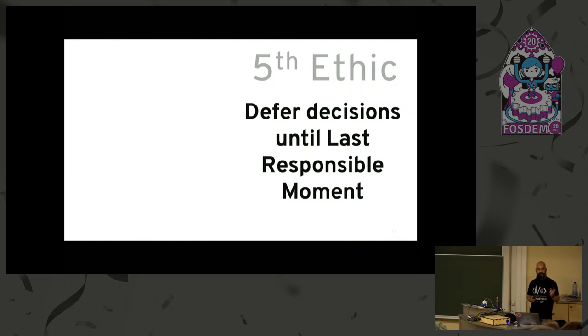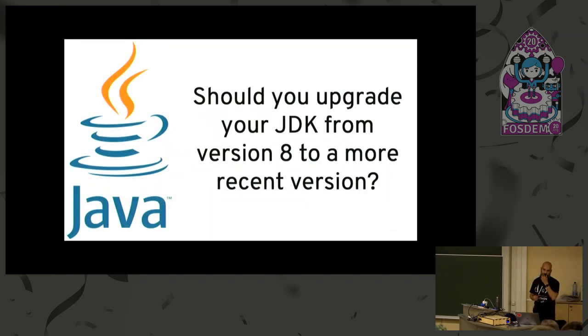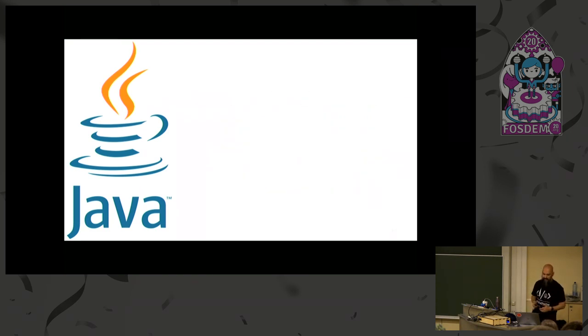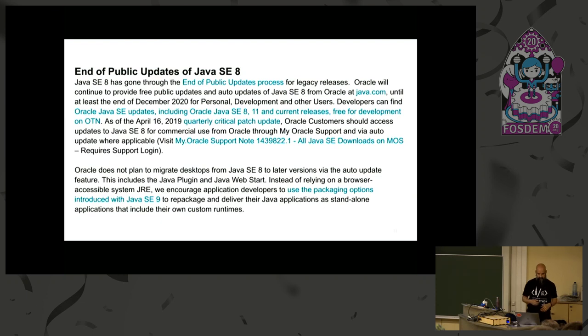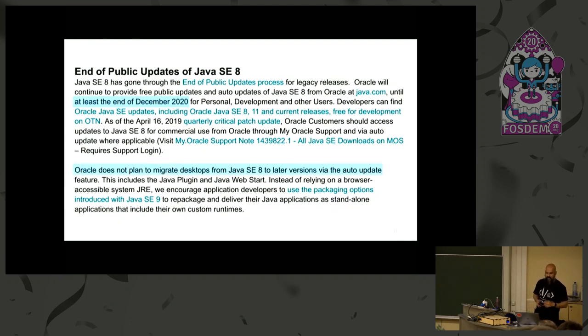So 97% of the time it may not matter, but that 3% is very critical. That brings us to the next ethic: defer decisions until the last responsible moment — but you want to know when that is. Here's an example: should you upgrade your JDK from version 8 to a more recent version? That's been a pressing problem for years. Well, you can make a scientific basis for that decision. From Oracle's website, the end-of-life for Java SE 8 is coming end of year — literally counting down by months.